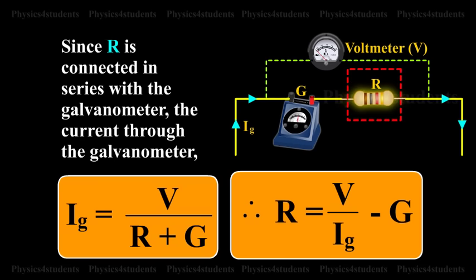Since R is connected in series with the galvanometer, the current through the galvanometer IG is equal to V into R plus G.